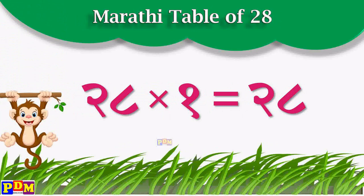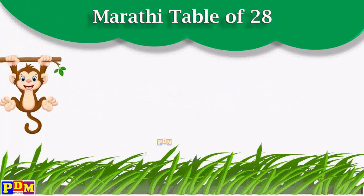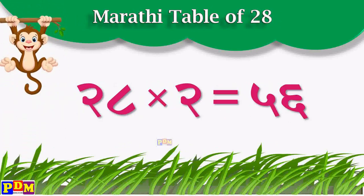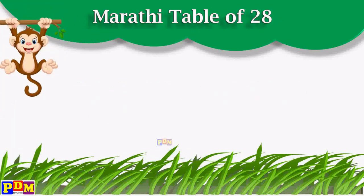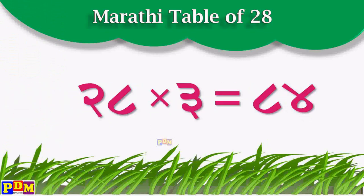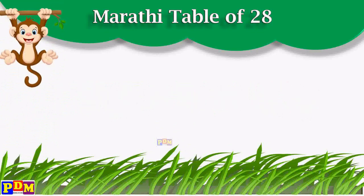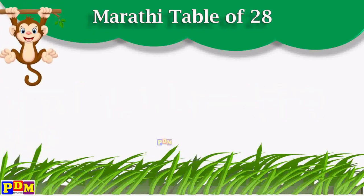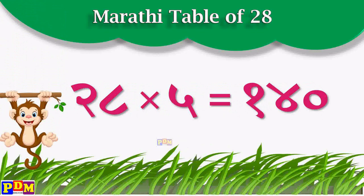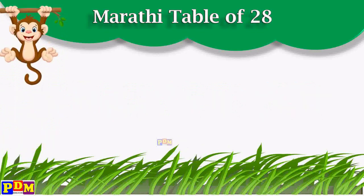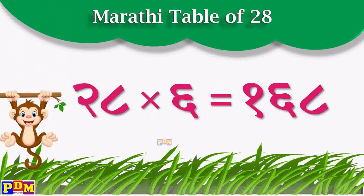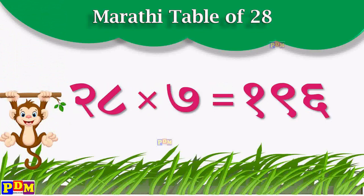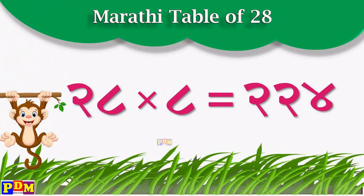Twenty-eight one twenty-eight, twenty-eight two fifty-six. 28, 1, 12, 1, 4. 28, 1, 12. 28, 1, 4. 28, 5, 140, 28, 6, 168, 27, 7, 196, 28, 8, 224.